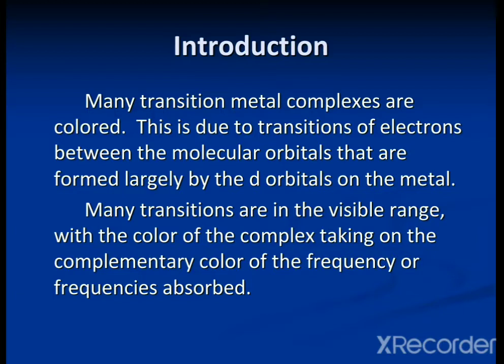Many transition metal complexes are colored. This is due to the transitions of electrons between the molecular orbitals that are formed largely by the d orbitals on the metal. Many transitions are in the visible range. The color of the complexes is due to the transitions of electrons from lower energy orbitals to higher energy orbitals. Due to these transitions, complexes absorb color and they show complementary color.